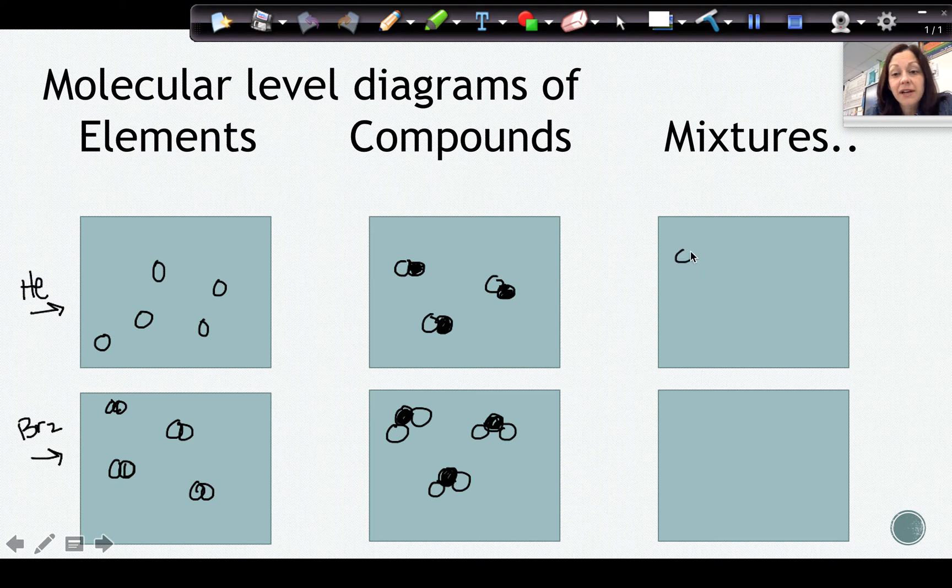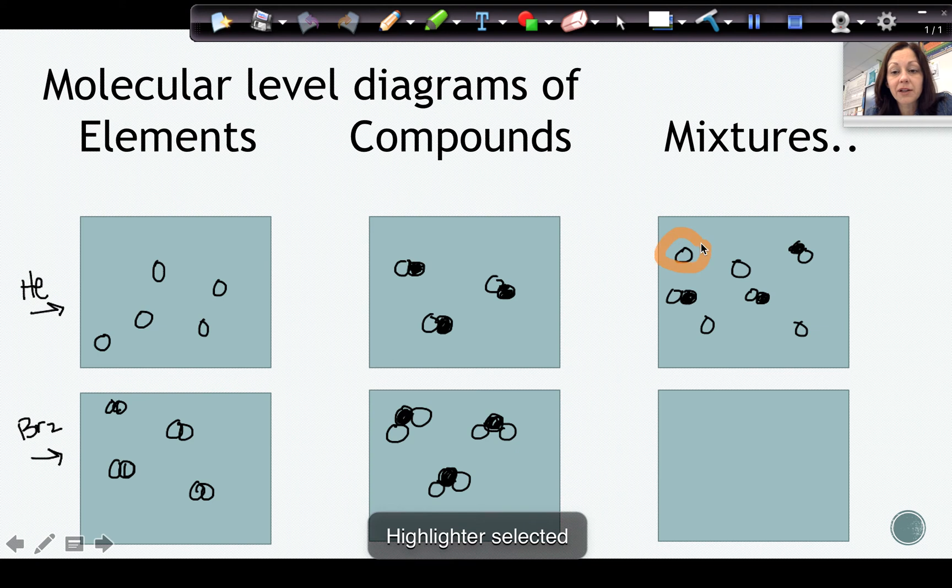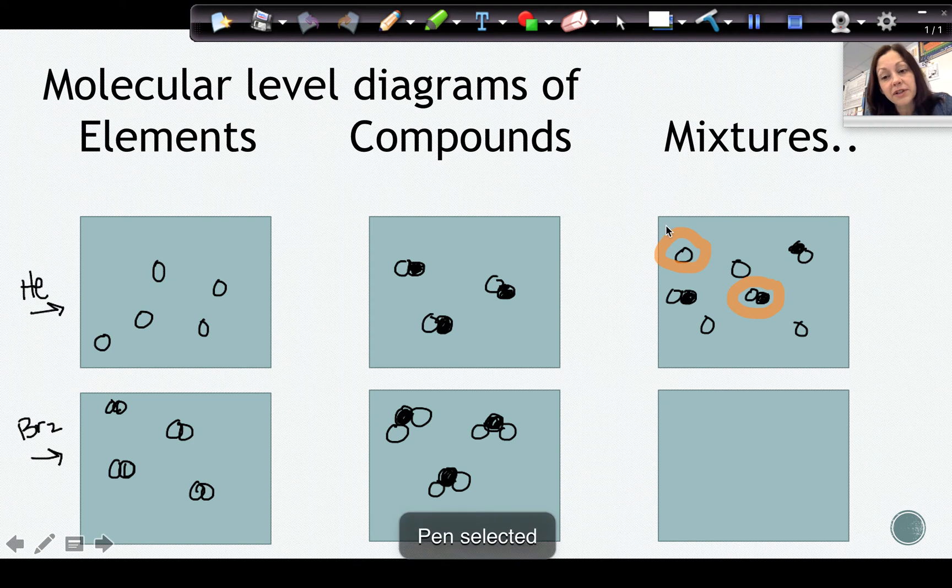For mixtures, we can either have a mixture of elements with compounds, have a mixture of elements with elements, or we can have a mixture of compounds with compounds. But as long as you see at least two different types of molecules, as long as you see at least two different types, you have a mixture.